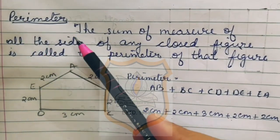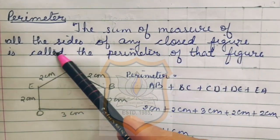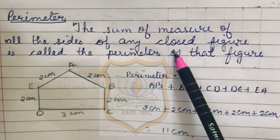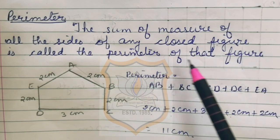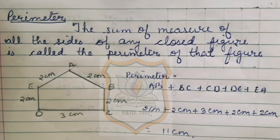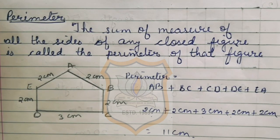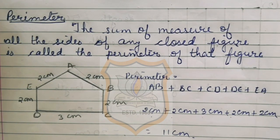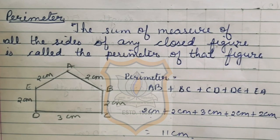Perimeter. The sum of the measure of all the sides of any closed figure is called the perimeter of that figure. Perimeter means the sum of the measure — sum means to add. We have to add the measure of all the sides of any closed figure. Then we get the perimeter of that figure.